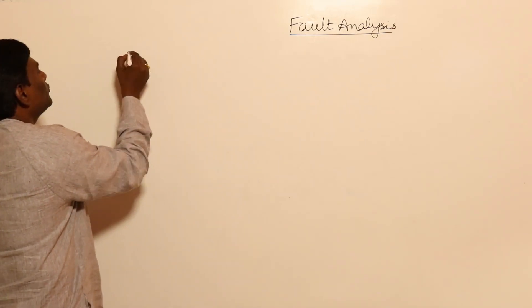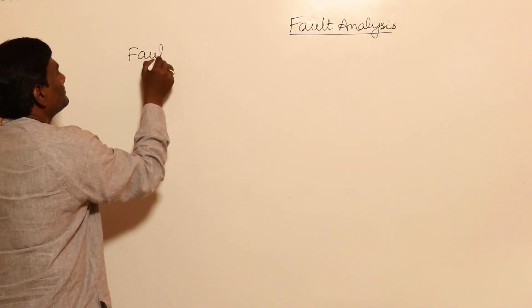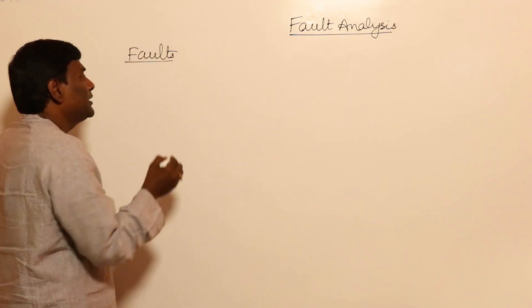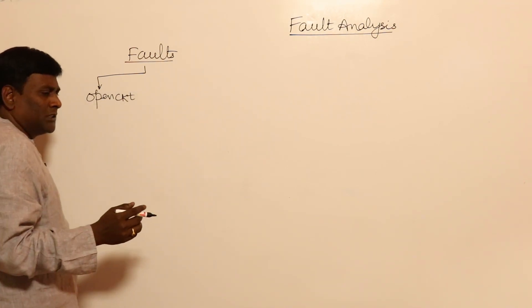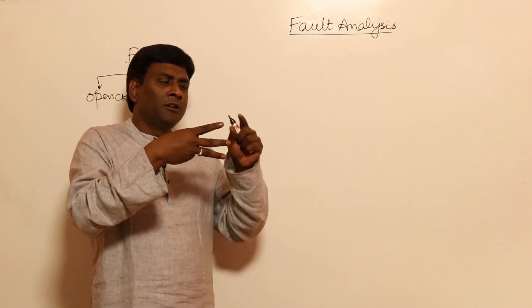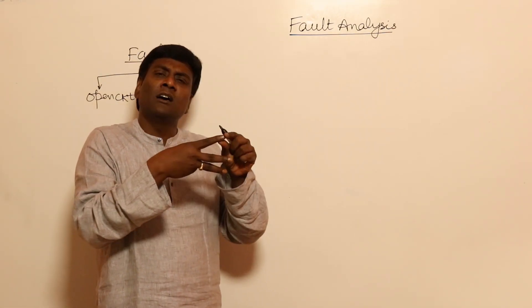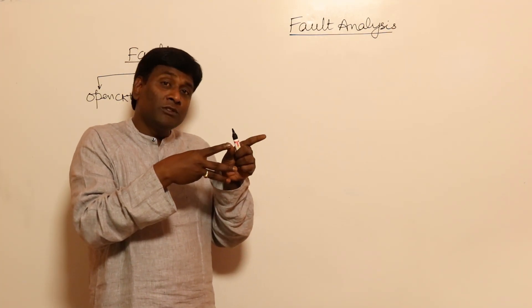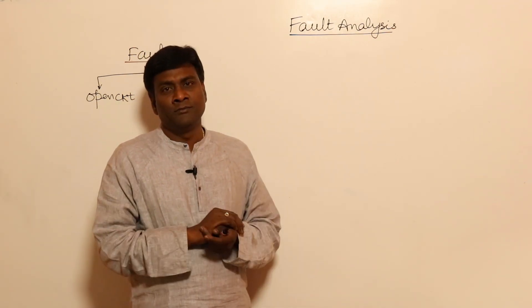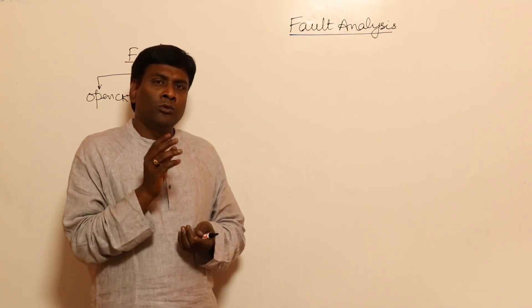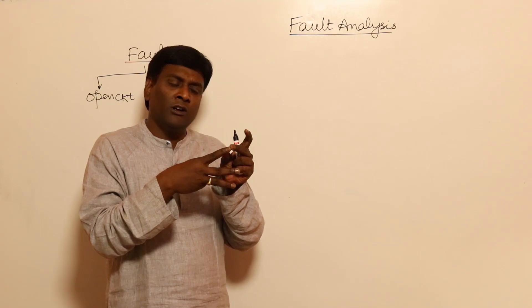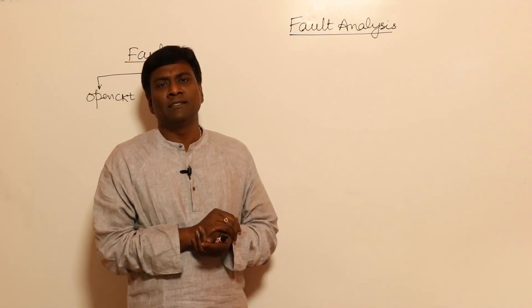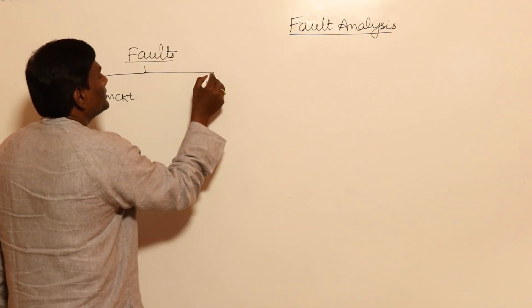We analyze faults to find out the capacity of circuit breakers. Faults can be classified into open circuit faults and short circuit faults. In a power system, for example, if three lines are going and one wire is broken, that is an open circuit fault. If a wire falls on the ground, that is a short circuit fault. Both open circuit and short circuit are faults.